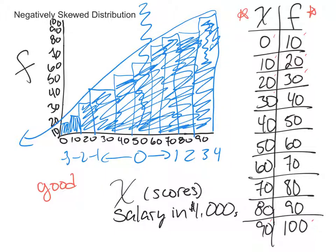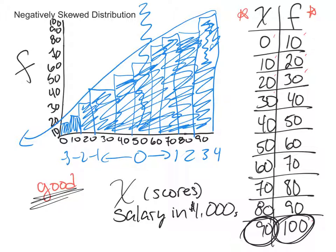For our example here, that's actually a really good thing — we want people to make a lot of money. In this scenario, we have 100 people that make $90,000 or more. So that's a really good thing, because our scores in this case was salary in $1,000 increments. This is a good example of how a negatively skewed distribution can actually be a good thing.